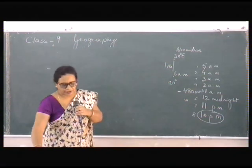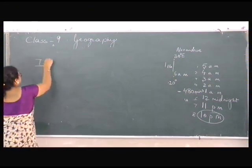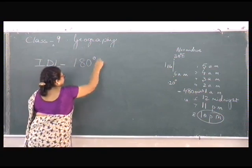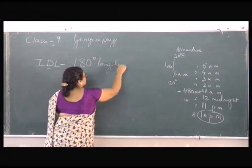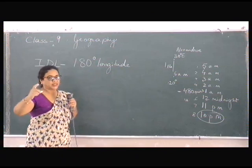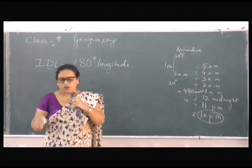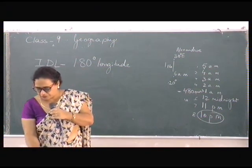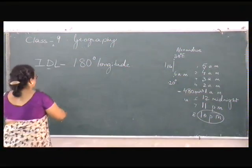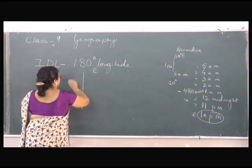This is the 180 degree longitude or meridian. It is a single line. When we cross this meridian, we either gain 24 hours or we lose 24 hours. It is better if you draw this figure to remember it. A single line for the 180 degree meridian. This is your eastern side, this is your western side.